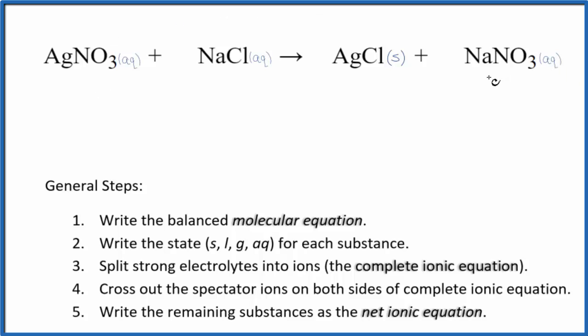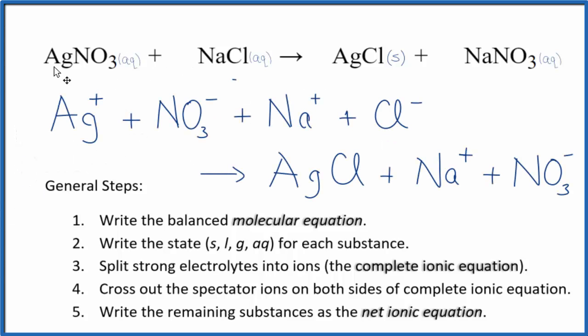We look at these states here. We can split up these aqueous, these strong electrolytes, into their ions, and that's what gives us the complete ionic equation. So we're going to go from the molecular equation to a complete ionic equation. That's going to look like this, and to do this, you do need to know how to find the charges on each of these ions.